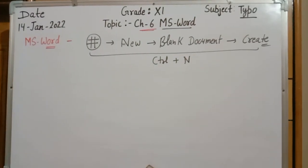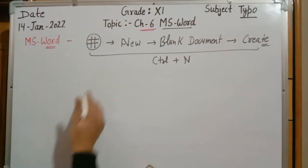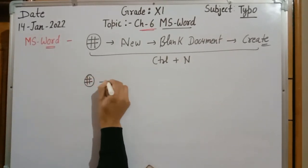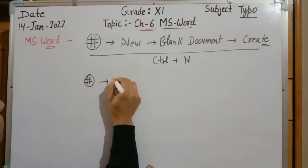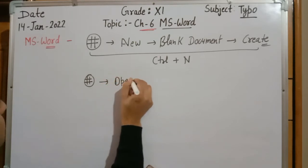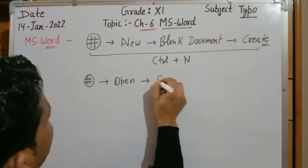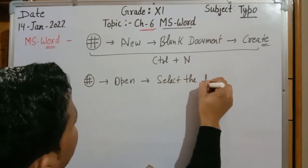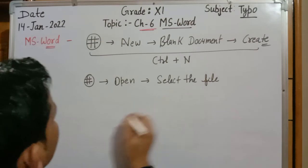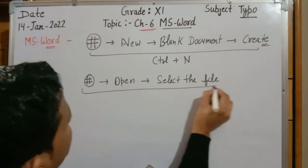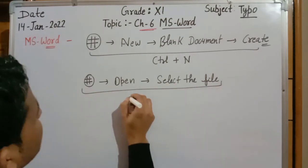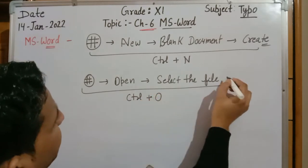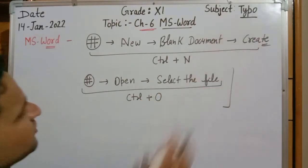To open an existing document, go to the Office button, select Open, and then select the specific file you want to open. The shortcut key for this operation is Ctrl+O — it is used to open an existing file.